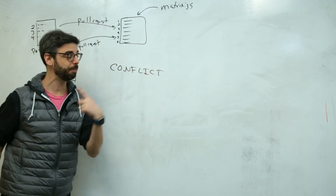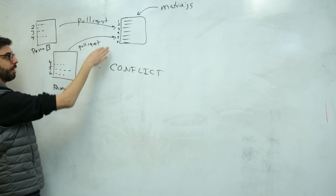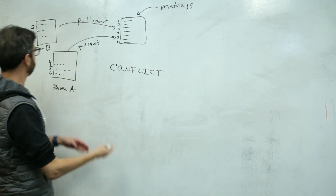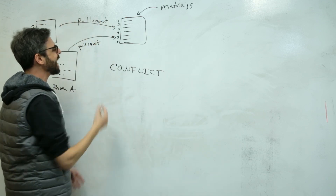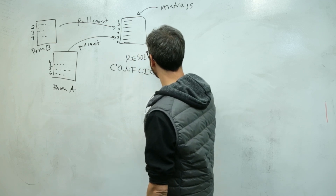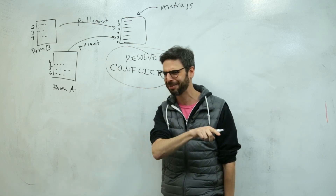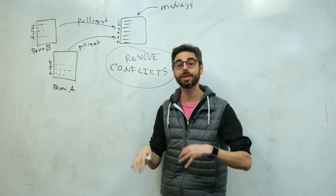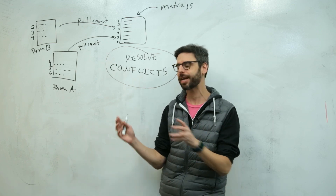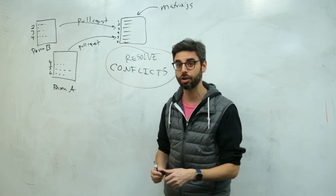And typically what will happen — and what just happened to me right now — is I merged this first pull request and it merged with no problems. But now when I went to merge this second one, I got a message saying 'resolve conflicts.' Now there are a variety of ways you can resolve conflicts. In some of my previous tutorials I looked at working with Git command line locally, but what I'm going to do is see if I can resolve the conflict just through the GitHub interface itself. Let's take a look at how that works.